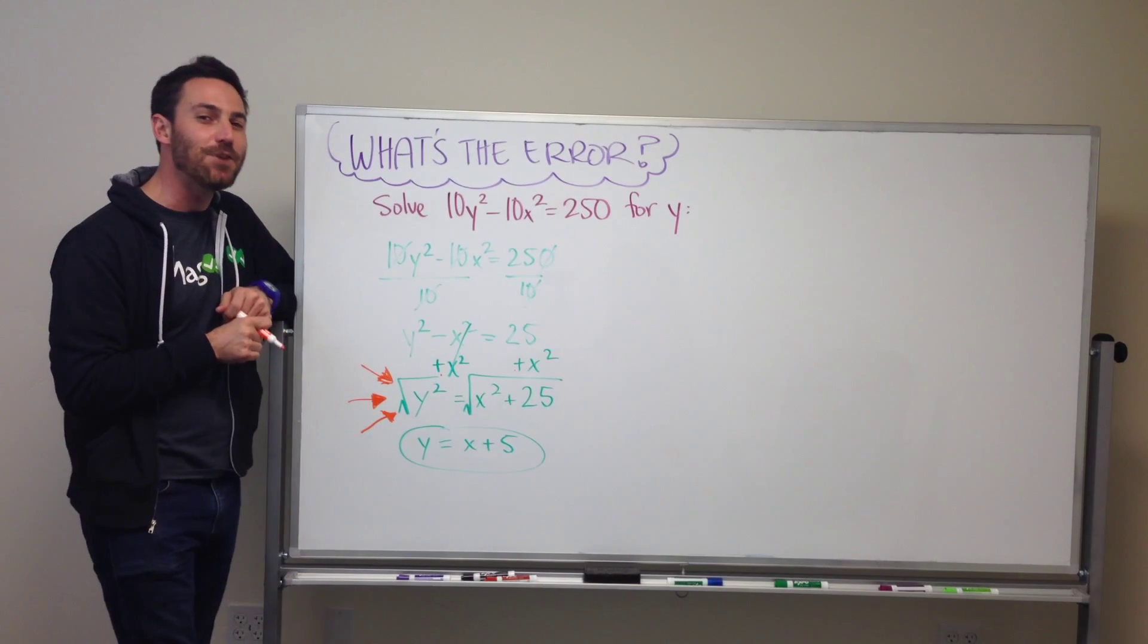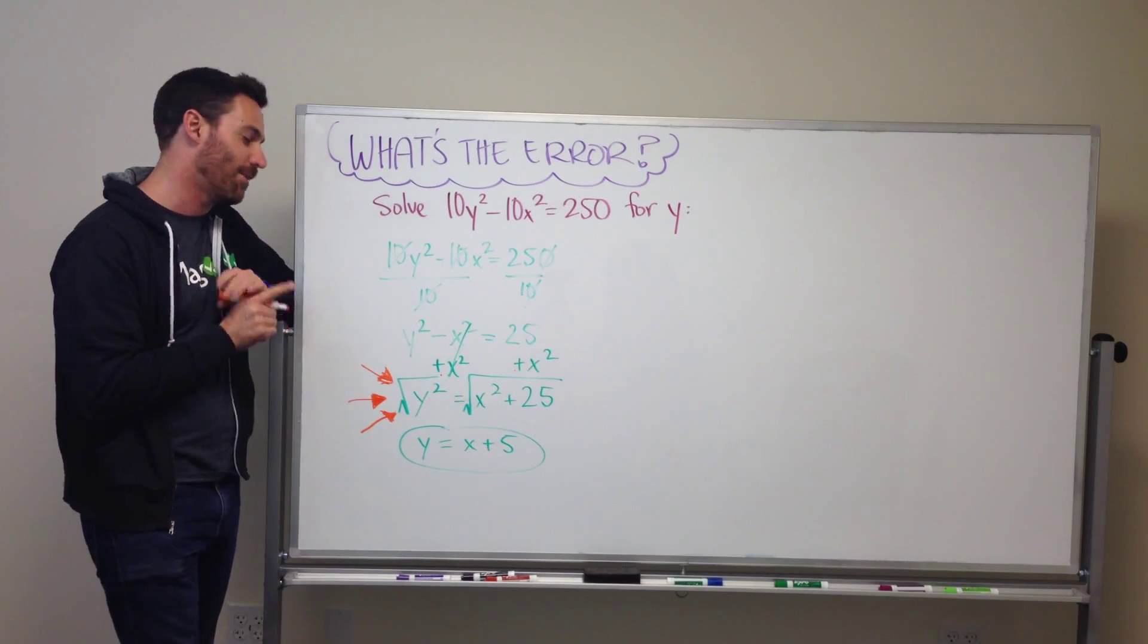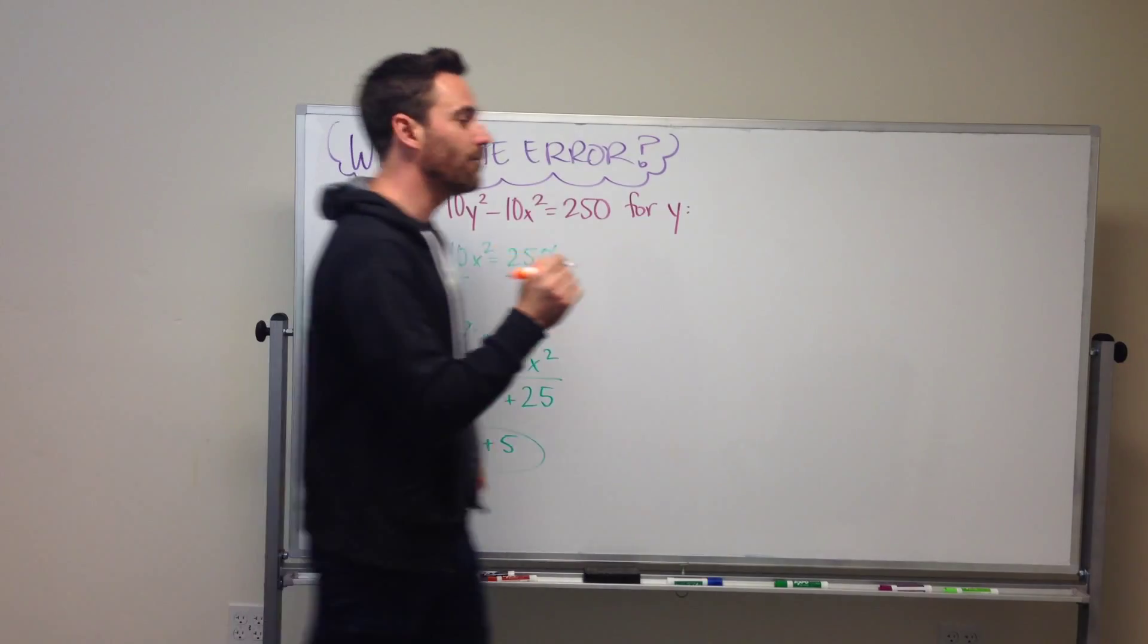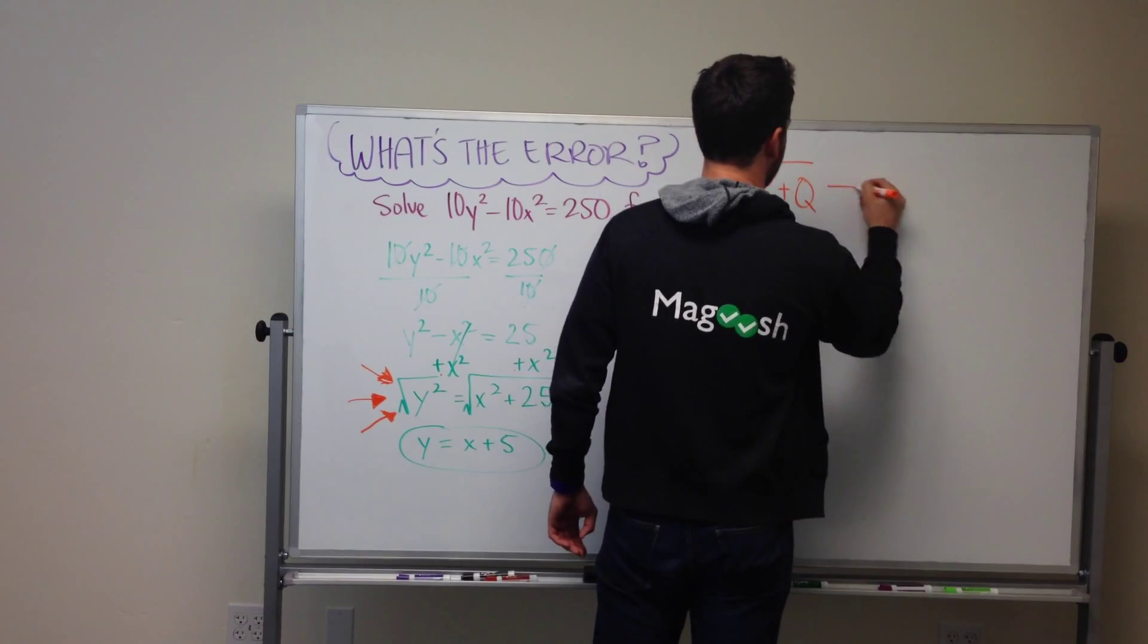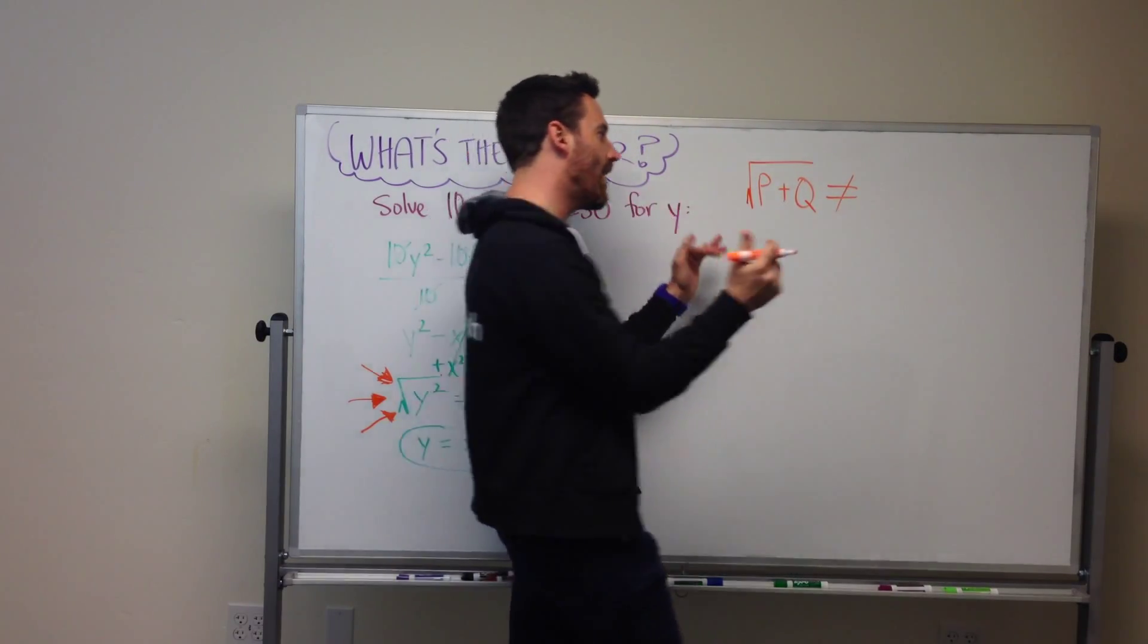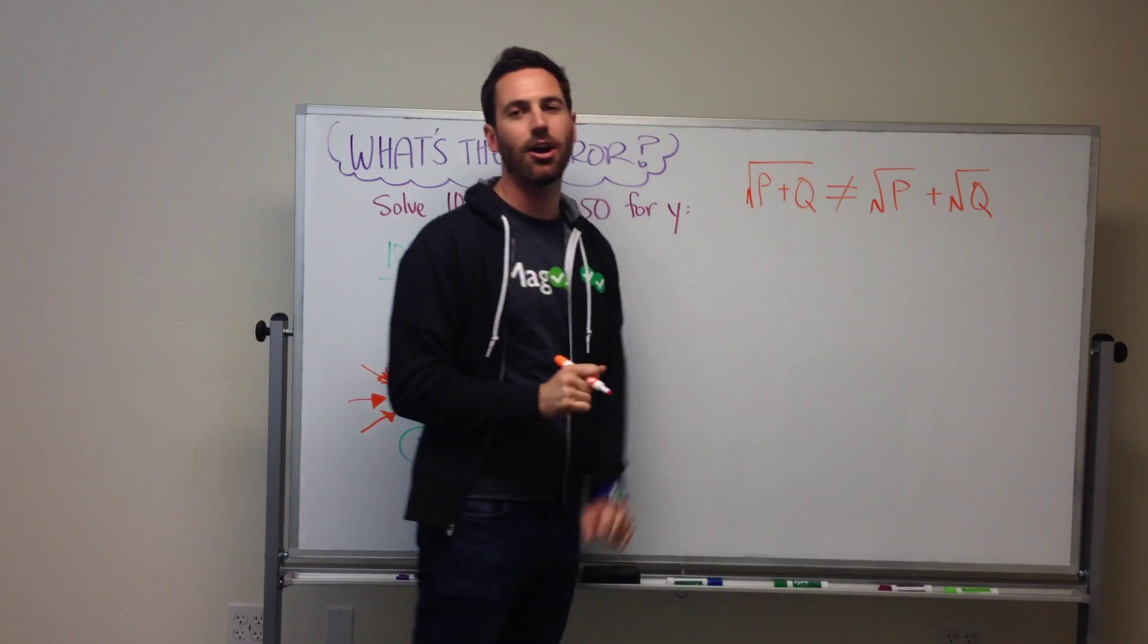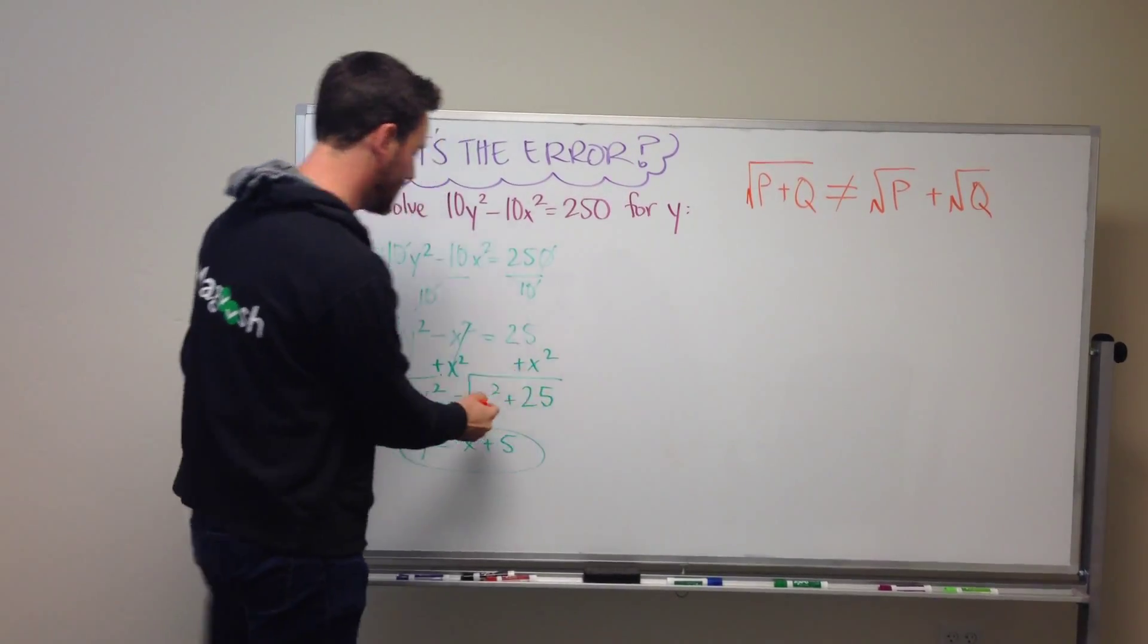They are confusing the distributed property of multiplication and division with addition and subtraction. So the rule is you cannot, cannot, so square root of p plus q cannot do this. You just can't break it apart and take the square root of each individual item there. And that's what they did here.